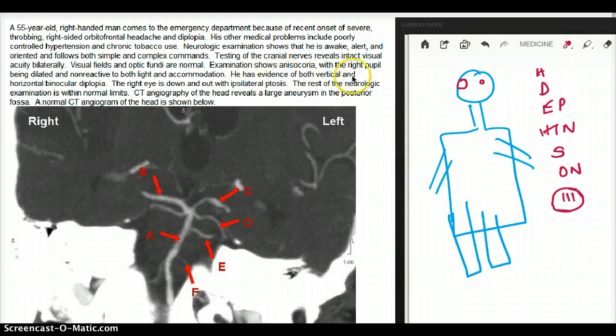He has evidence of both vertical and horizontal binocular diplopia. The right eye is down and out, which also tells me again this is cranial nerve 3, with ipsilateral ptosis. The rest of the neurologic exam is within normal limits.